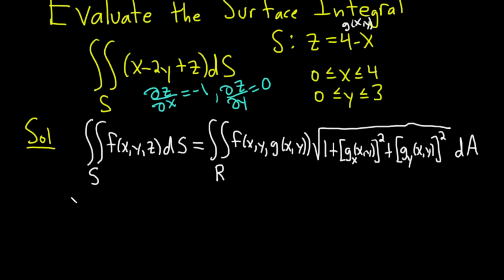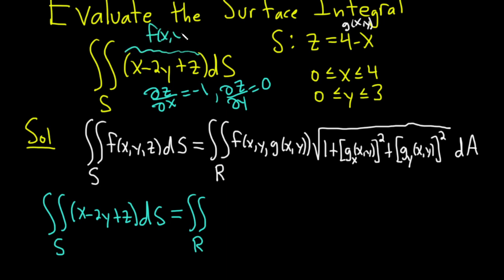All right, let's go ahead and write down the original question again. So we have this surface integral, x minus 2y plus z dS. Let's be really careful here. So we have this integral over R. Here, f of (x, y, g(x,y)) basically means we're going to take the z and put it here where the z is. So it'll be (x minus 2y plus z), but z is 4 minus x.